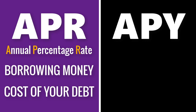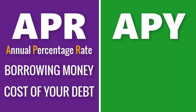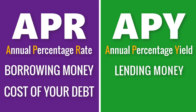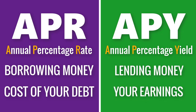APY is usually used by investment companies or maybe crypto yield farming. It's the Annual Percentage Yield — how much you're going to earn or make by lending or investing money. So that's fundamentally the difference: APR is when you're borrowing money, APY is when you're lending money or investing.